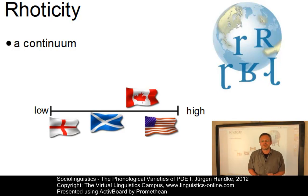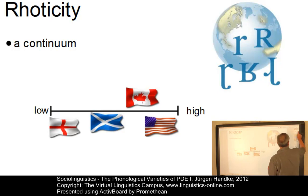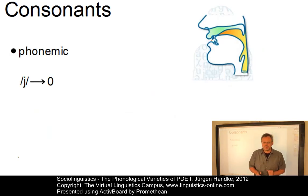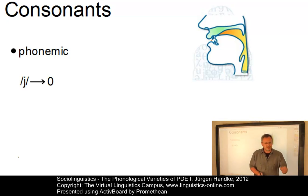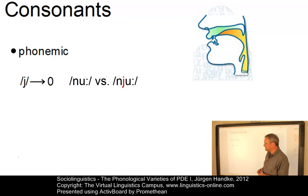Let us now look at the other consonants. Most of them are used in a uniform way in the varieties of English — for example, there is no problem with an alveolar fricative as in 'sea' or 'kiss', or a bilabial nasal as in 'man' or 'ham'. However, there are some consonants that can be used in various ways. The first is the palatal approximant as in 'year'. In some contexts it can be dropped — you have the choice between 'new' and 'new'. This effect is called yod dropping.